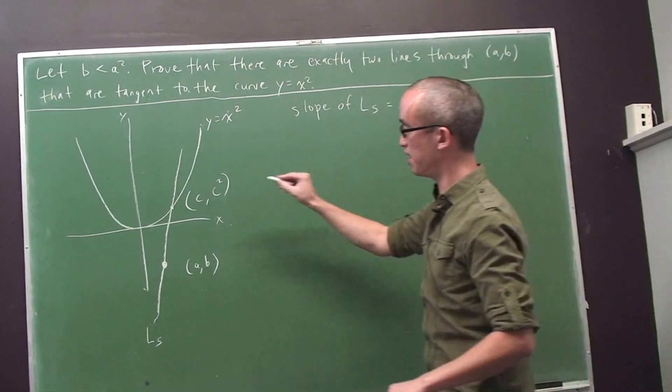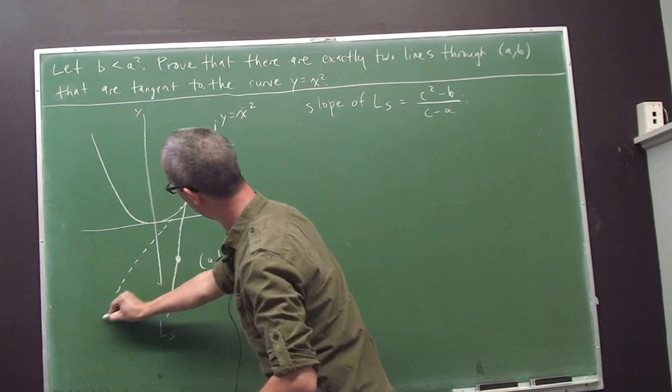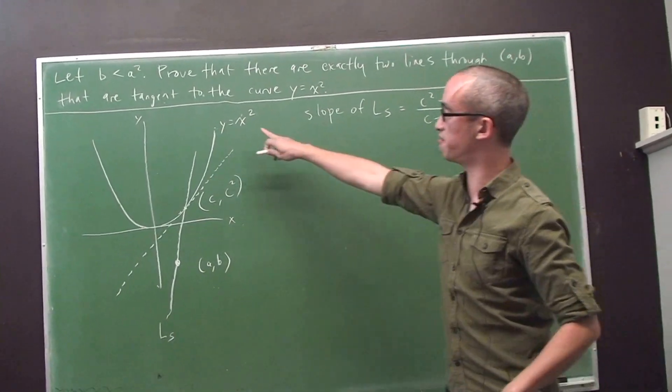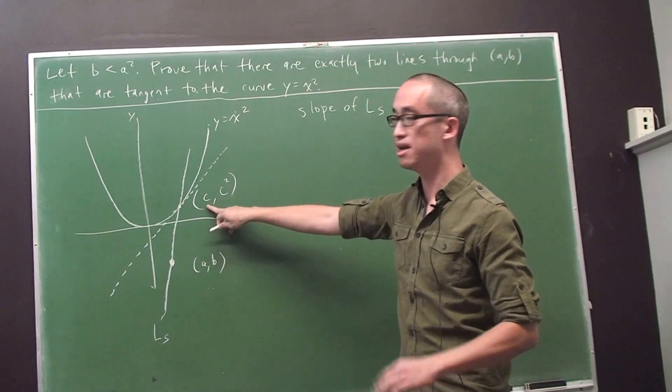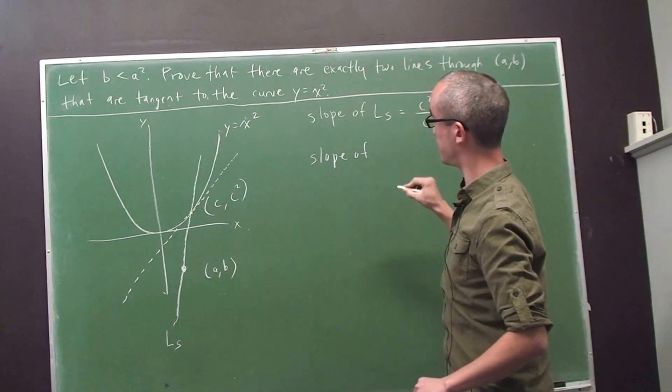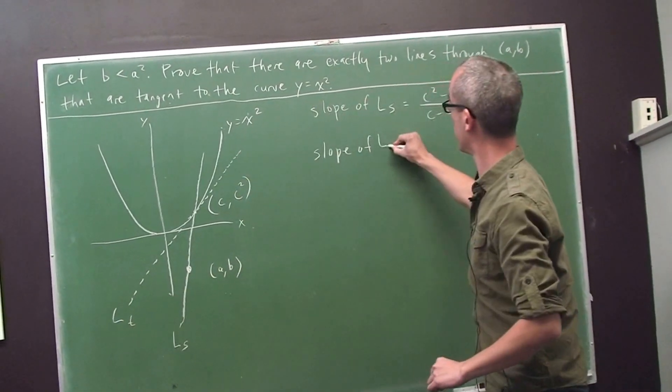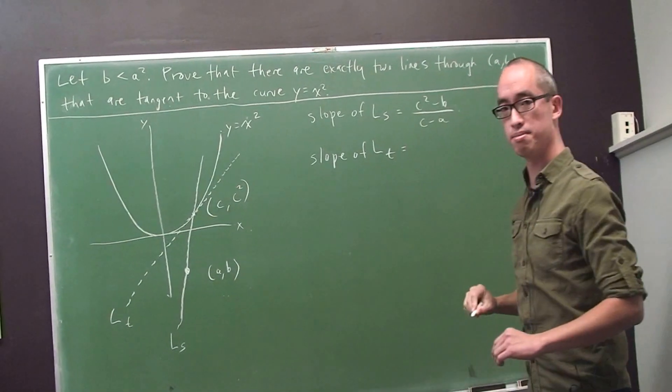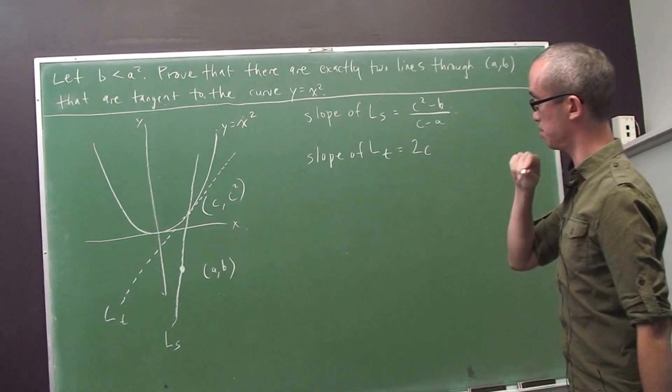I can also find the slope of the line tangent to the curve at (c, c²). So if I differentiate x squared, I get 2x. If I plug in x equals c, then I get 2c. So the slope of that tangent line, which I'm going to denote L sub t, is 2x evaluated at x equals c, namely 2c.